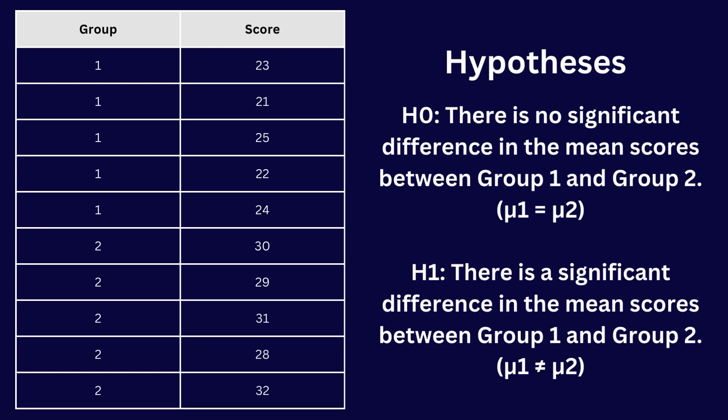Our null hypothesis is: there is no significant difference in the mean score between group 1 and group 2. The alternative hypothesis is: there is a significant difference in the mean score between group 1 and group 2.